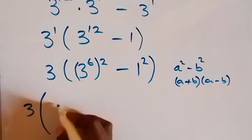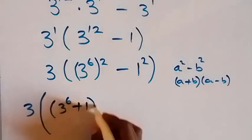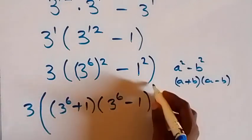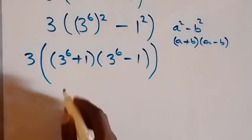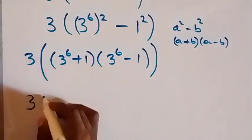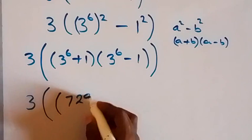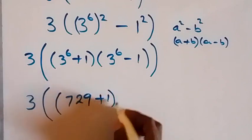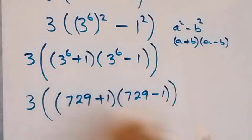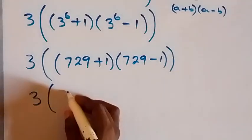So this becomes 3 into bracket: 3 raised to power 6 plus 1, multiplied by 3 raised to power 6 minus 1. Now 3 raised to power 6 means 3 multiplied by itself 6 times, which gives us 729. So we have 3 into bracket: 729 plus 1.